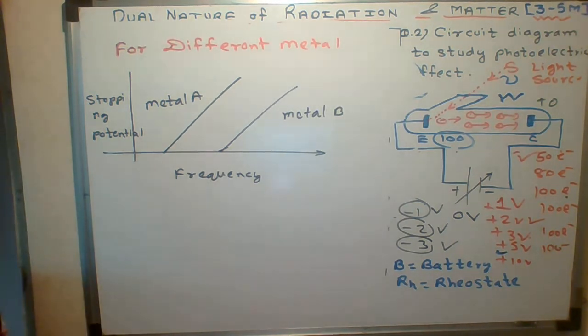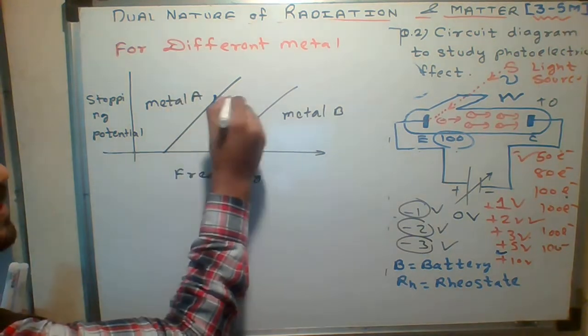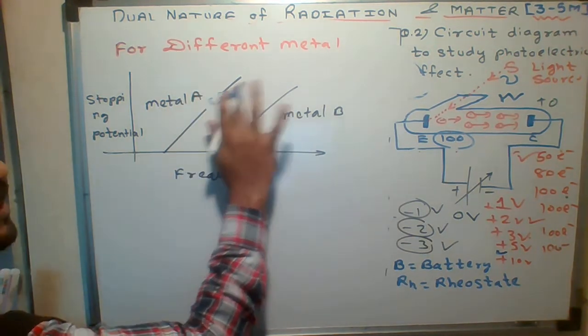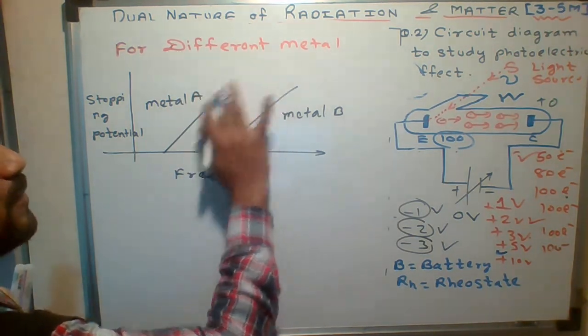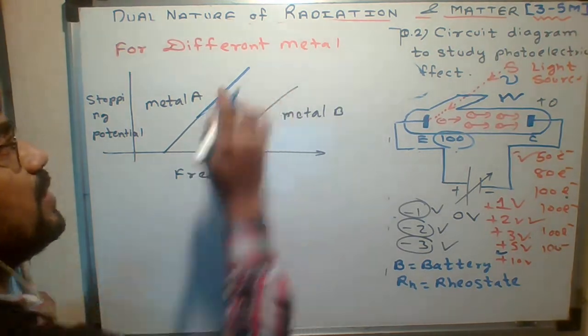If light is incident on that particular metal, every metal requires a different frequency.